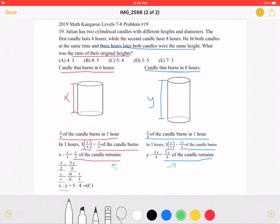Which means the ratio between the two heights, x to y, is equal to 5 to 4, which is answer choice C.